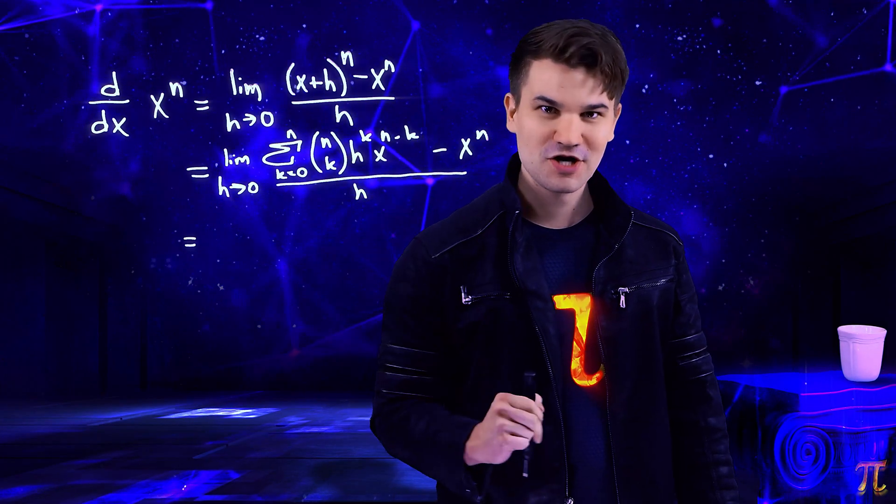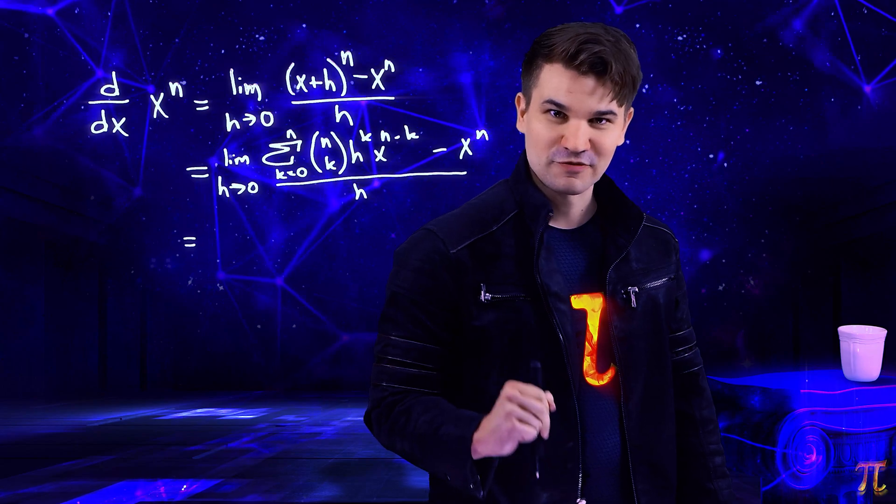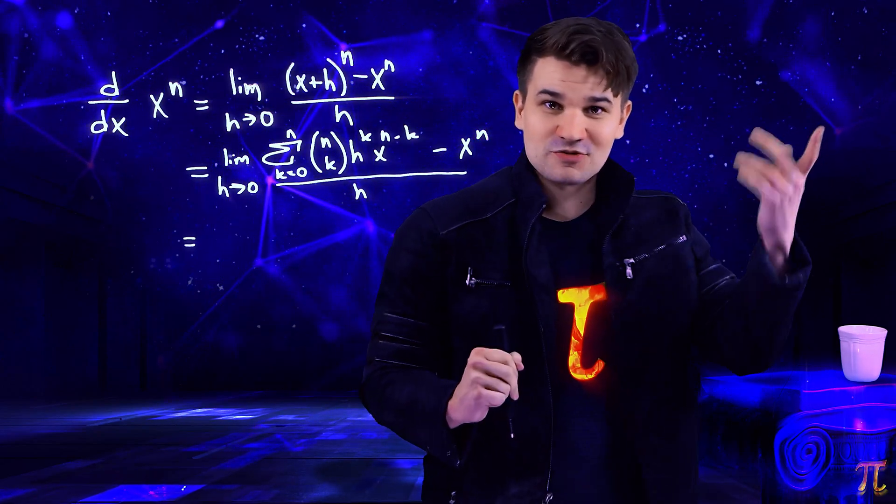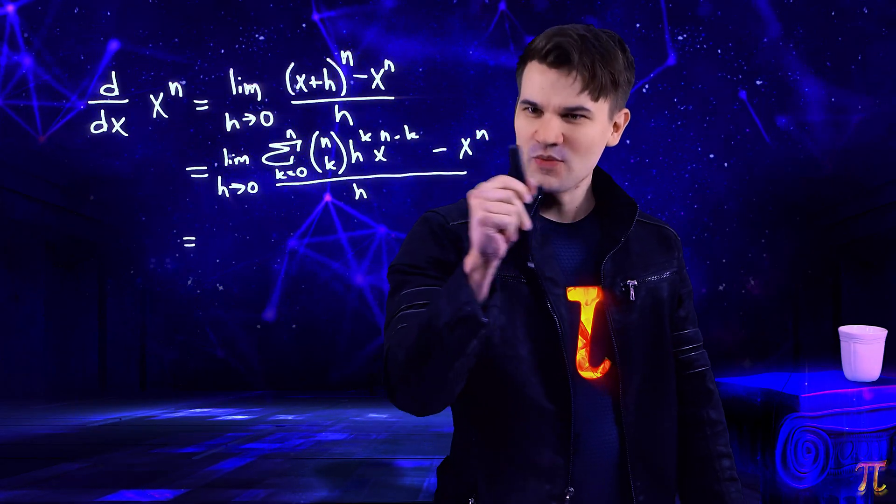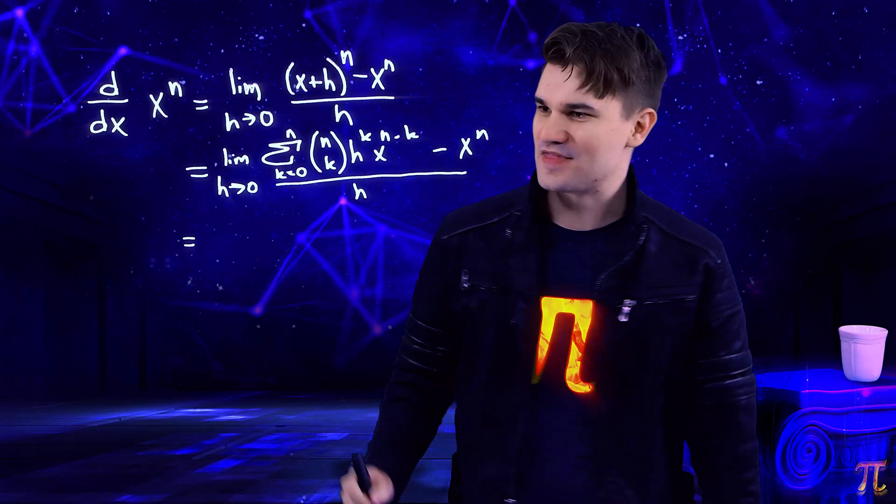And then we have n choose zero. How many ways can you select zero things from a set of n things? One way - you just don't take any. So we can bump that out of the sum and cancel it with that one.